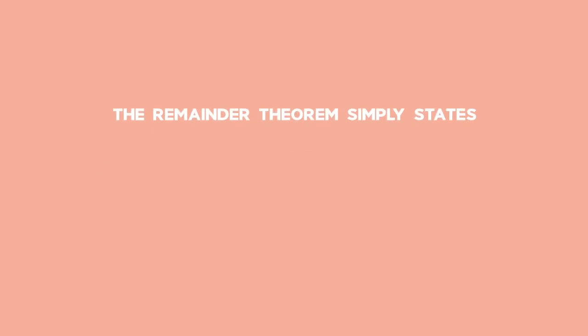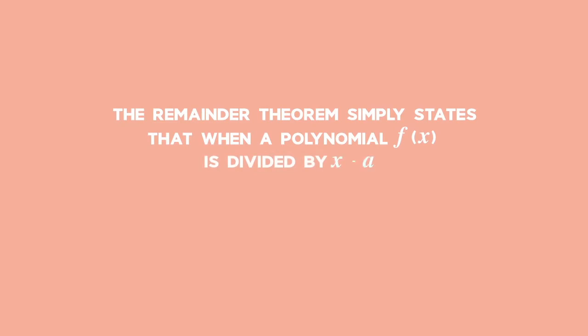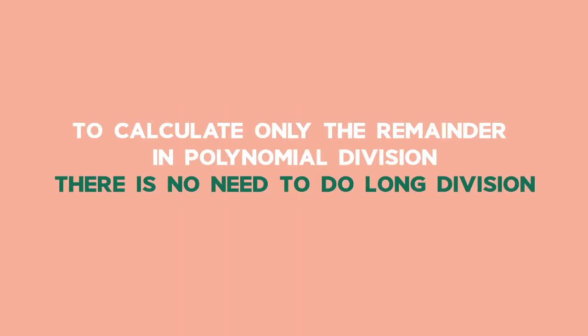The remainder theorem simply states that when a polynomial f of x is divided by x minus a, then the remainder r is equal to the value f of a. Hence, if you would like to calculate only the remainder of polynomial division, there is no need to do long division — just calculate f of a.